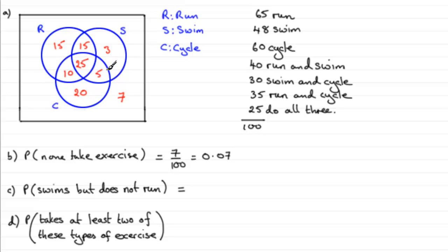They're going to swim but not run. So we've got a total then of 3 plus 5—let's just put that down then as 8 out of all of the people. Again, 8 out of 100, or if you want as a decimal, 0.08.